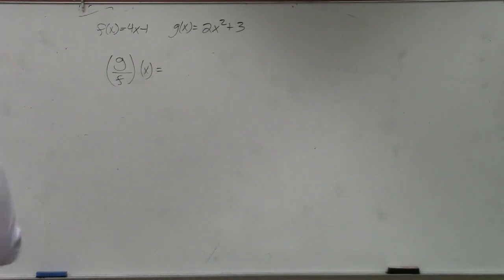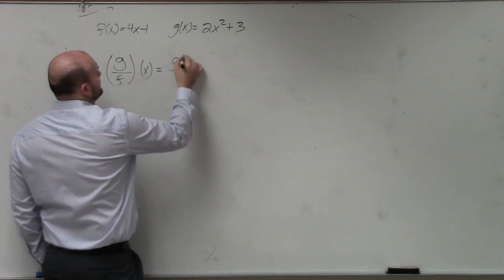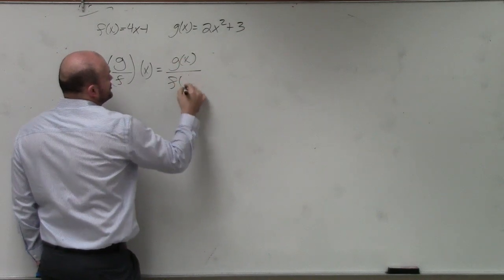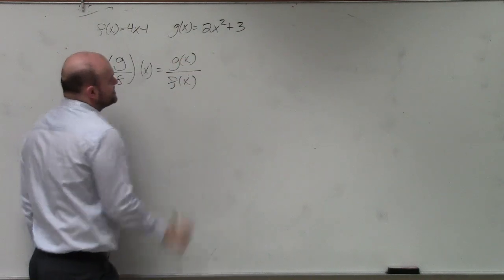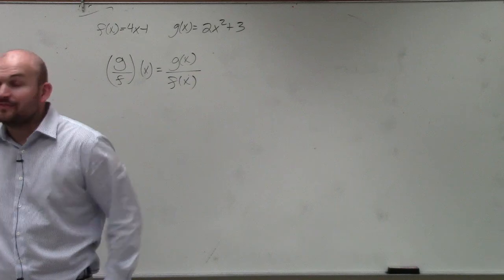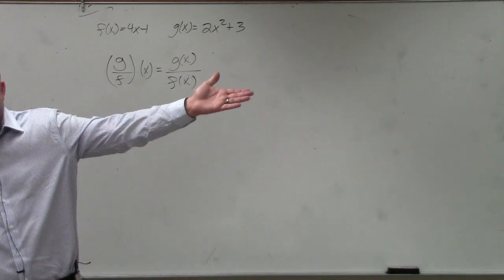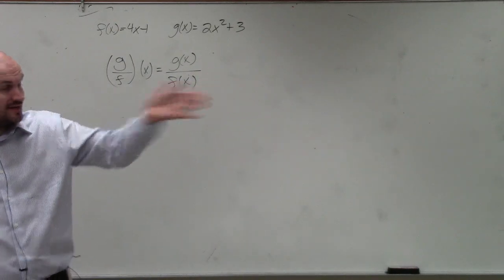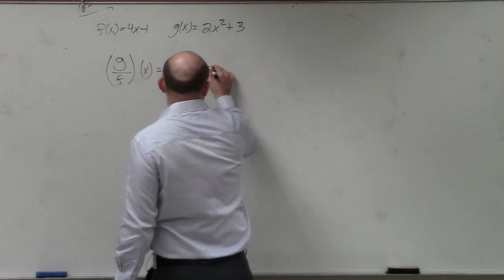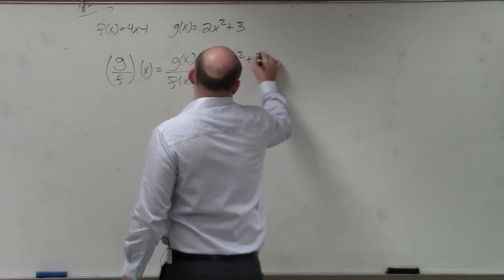I just tried to get blocked, like no green picture. G of x over f of x — that's exactly what the notation represents. All you guys had to do was take one function and put it over the other function.